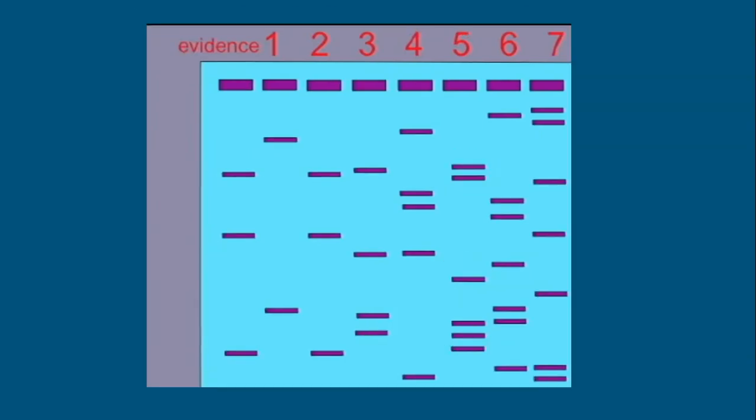In this next example, again, we have evidence and seven suspects, but you can see here that suspect two is the one who left that evidence behind, and we can now place suspect two at the crime scene. So that's it, how you read a DNA fingerprint.